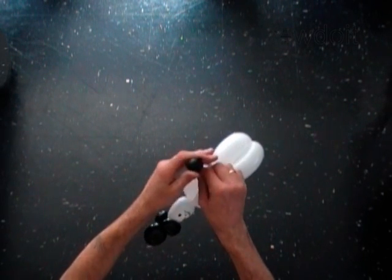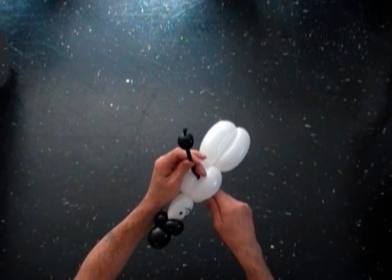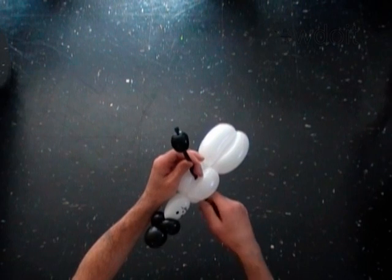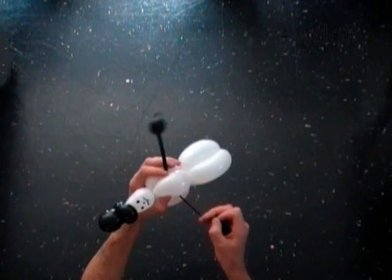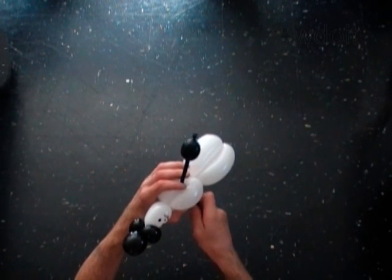You have to lock the black bubbles so they will stay separate. You can do it by tying both ends of each black bubble in one lock twist.